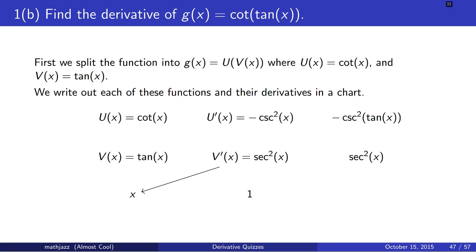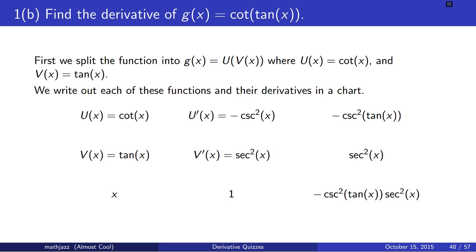And then, we multiply all of the elements in our third column together to get the derivative of our function g of x. So, g prime of x equals negative cosecant squared of tangent of x times secant squared of x.